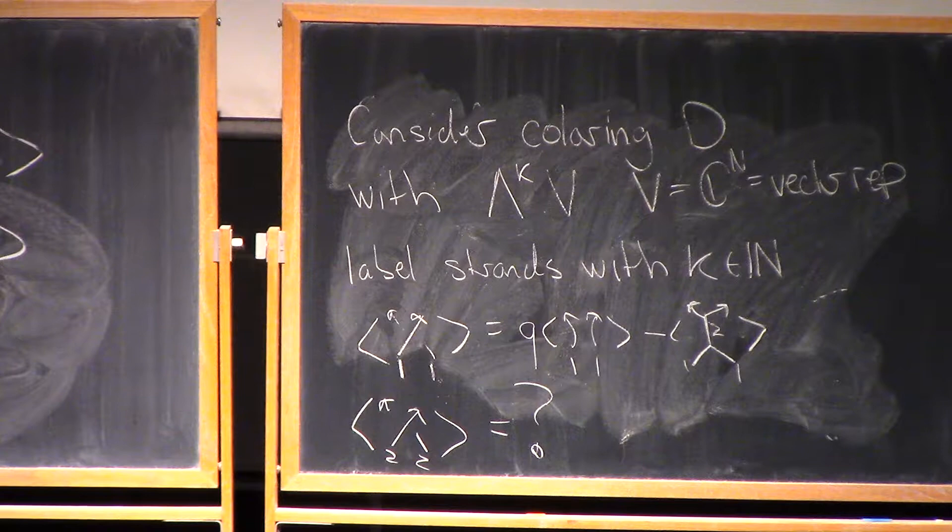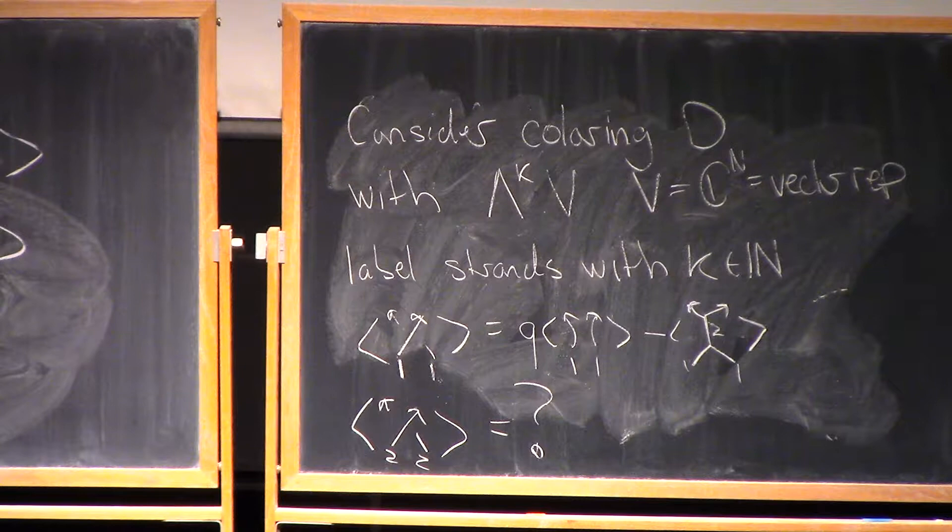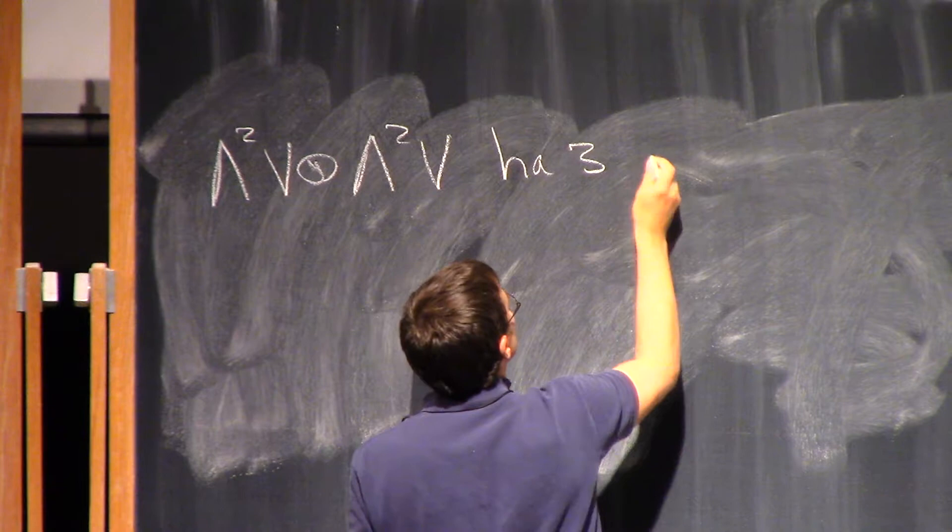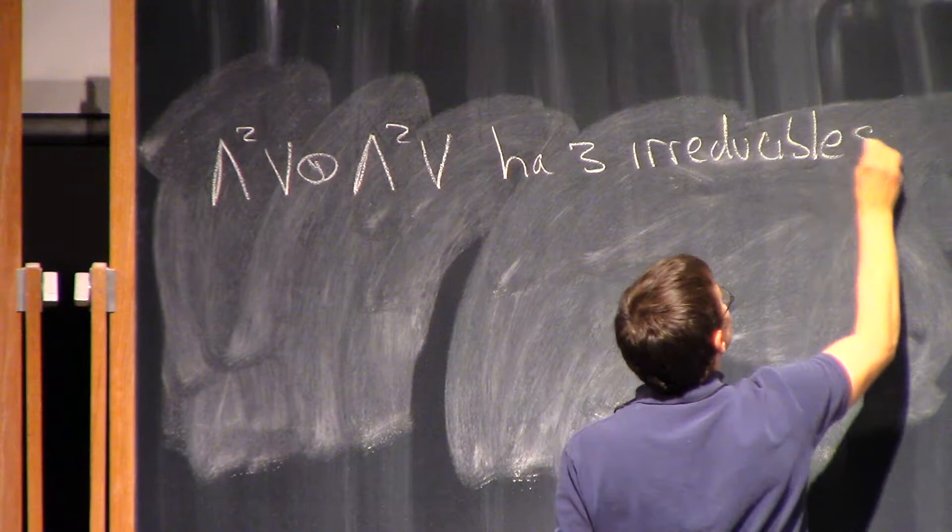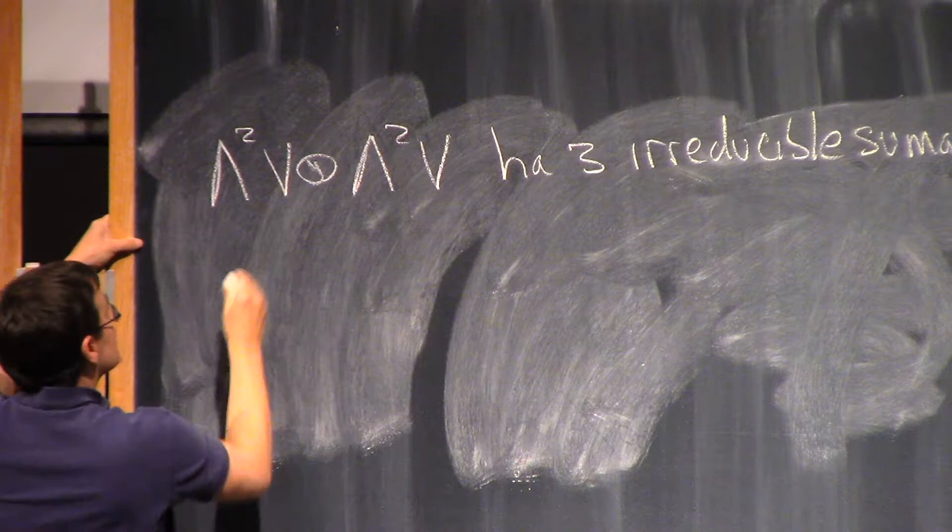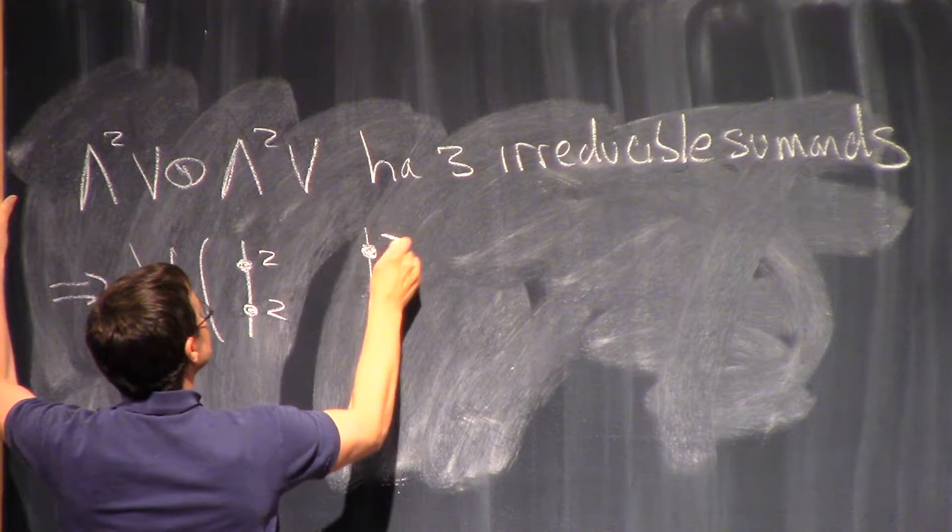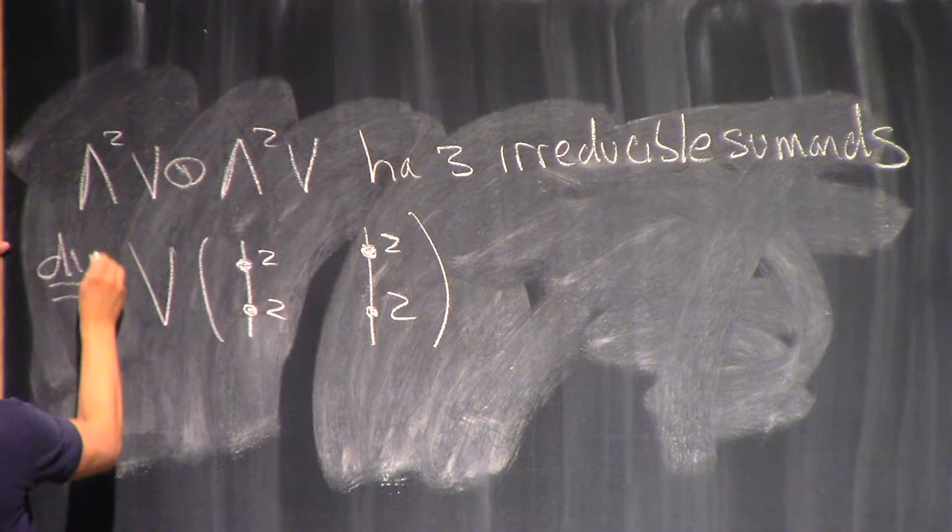Well, maybe let's just think for a moment. I'm gonna tell you an answer. So it's an exercise to see that if I look at wedge 2V tensor wedge 2V, this has three irreducible sum ends. So that means that the vector space that I associate to a tangle diagram like this, where now this is a two and this is a two, this is a two, this is a two, this thing should have dimension three.